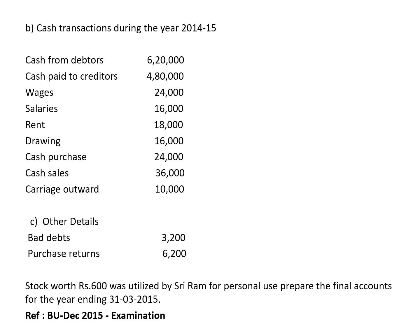Other details: bad debts 3,200 — goes to debtors account and P&L account. In the debtors account record 'by bad debts'; in the P&L account record 'to bad debts 3,200.' Purchase returns 6,200 — recorded in the trading account as total purchases less returns, and also in the creditors account as 'to purchase returns.'